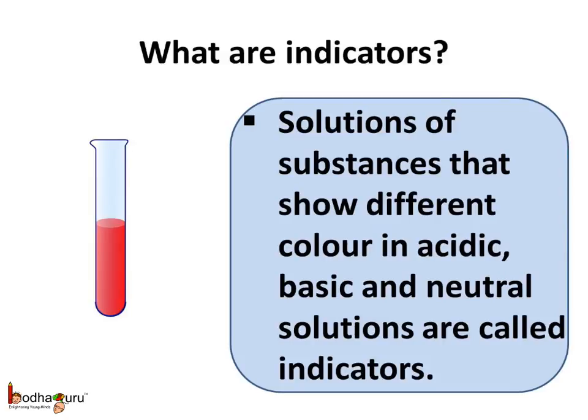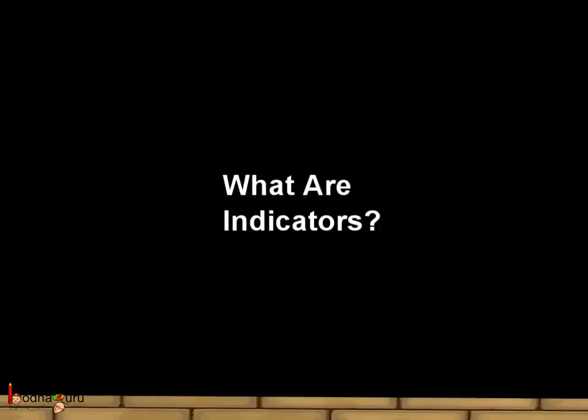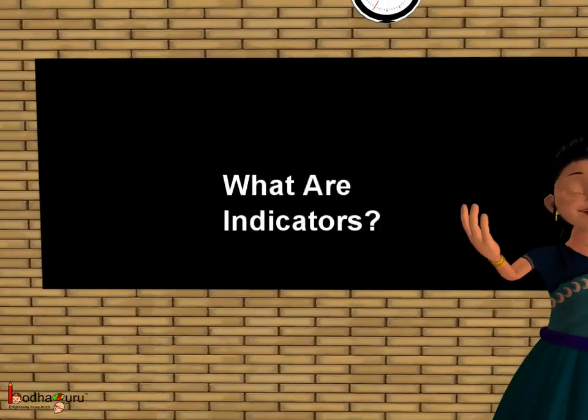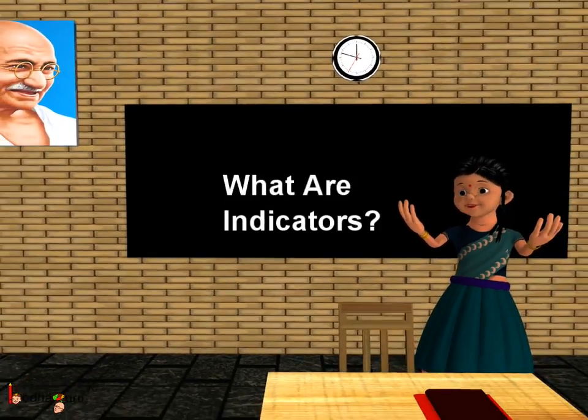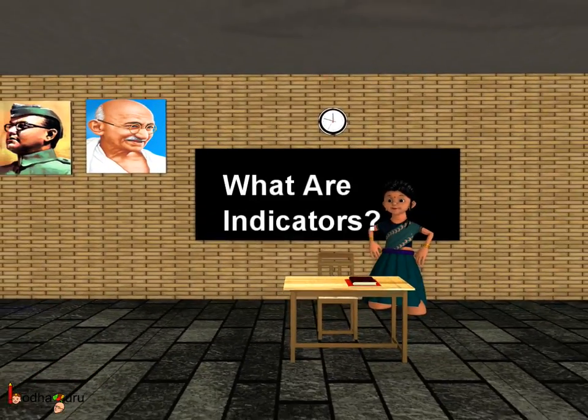And lastly, what are indicators? Solutions of substances that show different colors in acidic, basic and neutral solutions are called indicators. So that was all about acids and bases. Bye bye children.